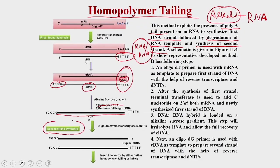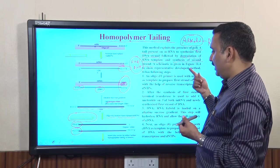For second-strand synthesis, you add a poly-G primer which binds to the poly-C tail added in the previous step. Using this poly-G primer, reverse transcriptase synthesizes the second strand, giving you the duplex DNA ready for subsequent cloning — either by restriction digestion or by adding adapter molecules.